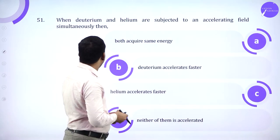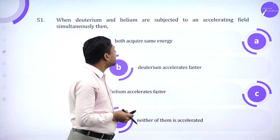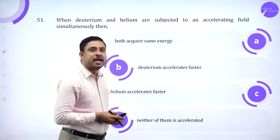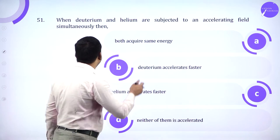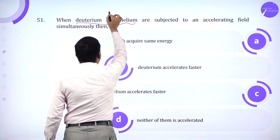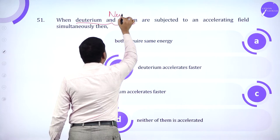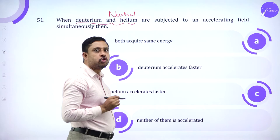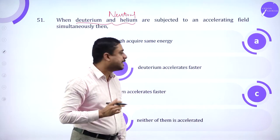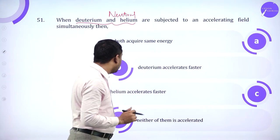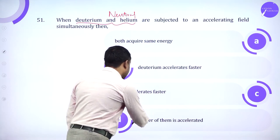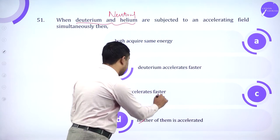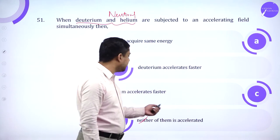When deuterium and helium are subjected to an accelerating field, both of them are neutral particles. They don't possess any charge, so both of them are not accelerated. Neither of them get accelerated.